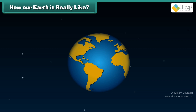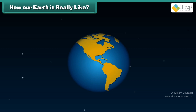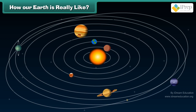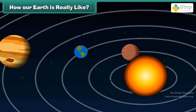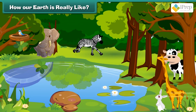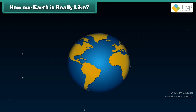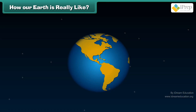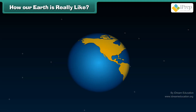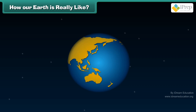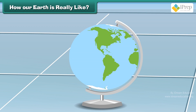Earth, our home, is the third planet from the Sun. It is the only planet where life exists because of the presence of air and water. The Earth is not perfectly spherical, but it is very close to the shape of a sphere. It looks like a globe.